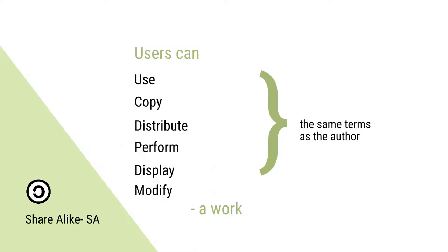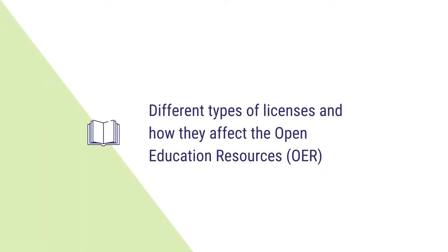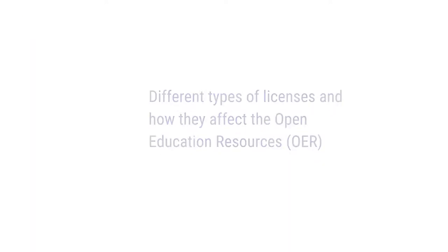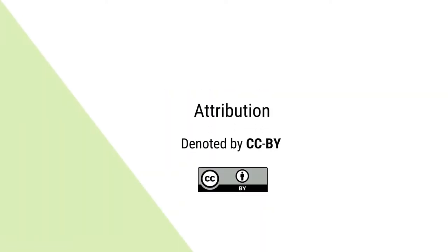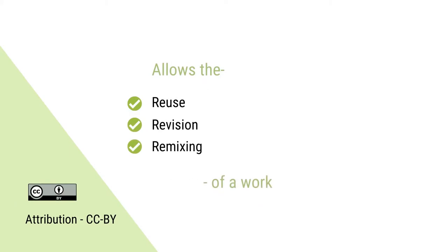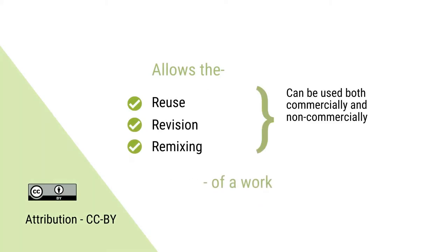Now that we have known about the different concepts in the CC system, we shall go on to discuss the different types of licenses in detail and how they affect the OER. The first one is Attribution, denoted by CC BY. This is the simplest of all CC licenses as it allows the reuse, revision and remixing of the content, which can be done both commercially and non-commercially, as long as the author or creator is acknowledged. This license ensures the maximum dissemination of the licensed material.